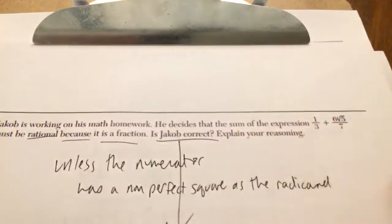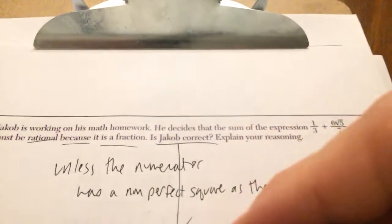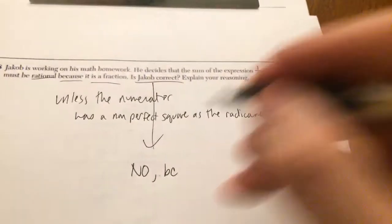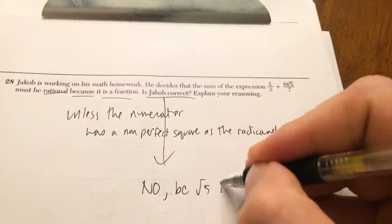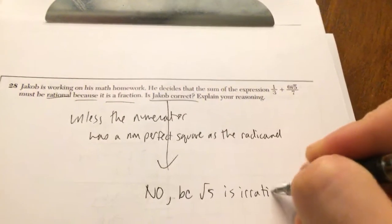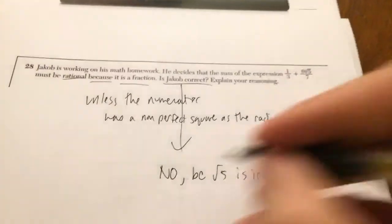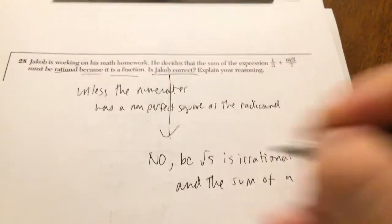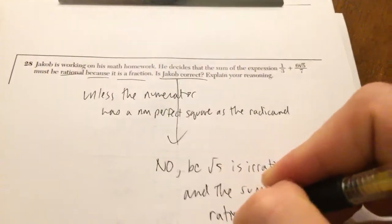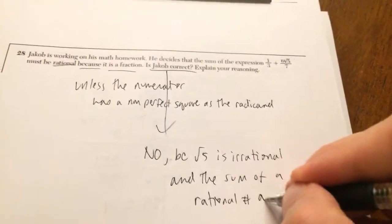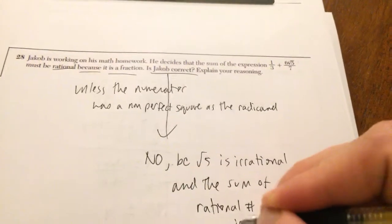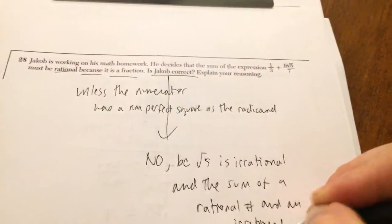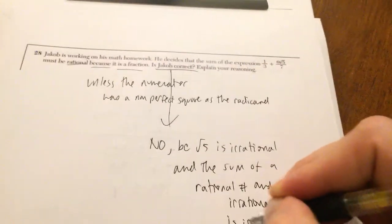Square root of 5 is an irrational number. So, is Jacob correct? Answer the question. No. And you could say because square root of 5 is irrational. And the sum of a rational number, which is 1 third, and an irrational number is irrational.